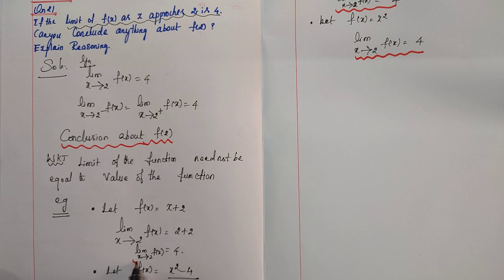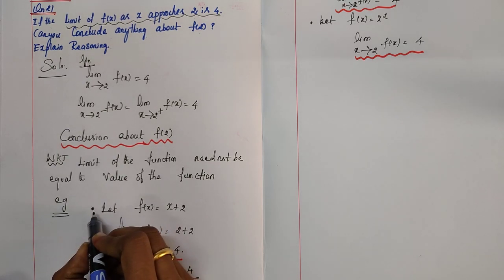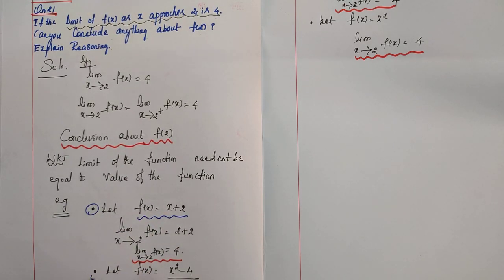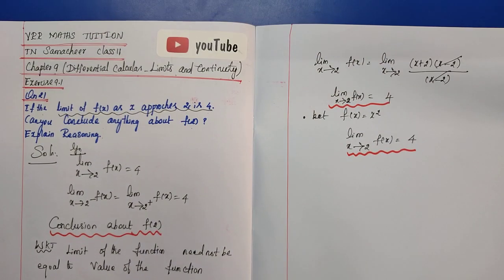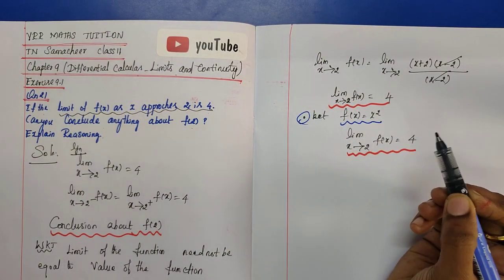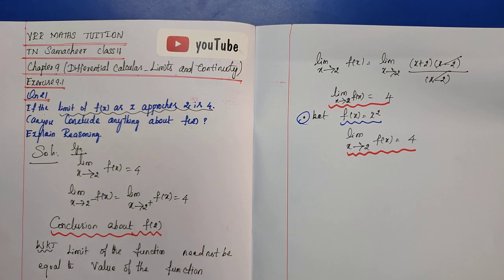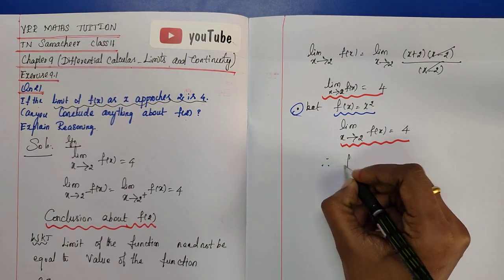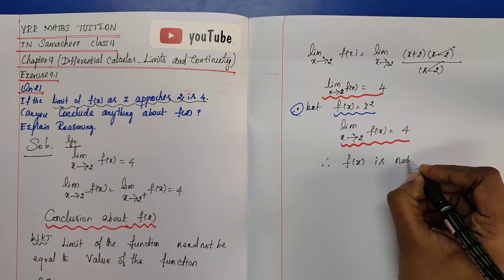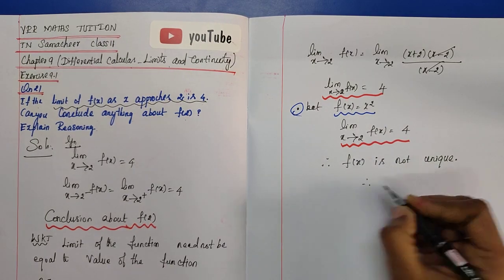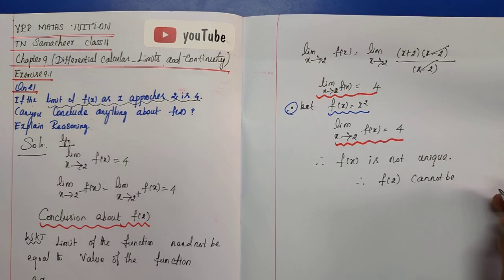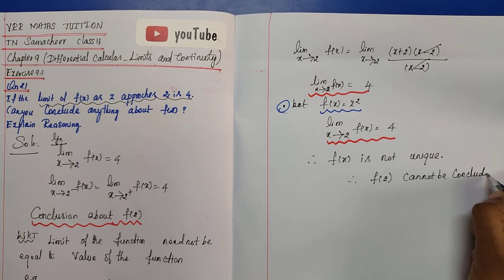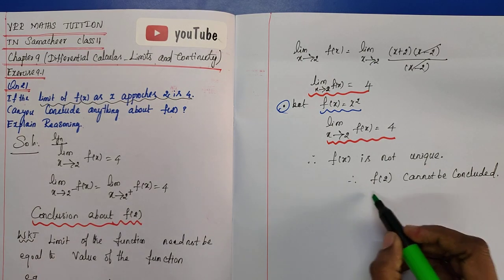So for all three examples the limit value is 4, but the functions are different: f(x) = x+2, f(x) = (x²-4)/(x-2), and f(x) = x². The function is not unique. Therefore, f(x) is not unique, and therefore f(2) cannot be concluded.